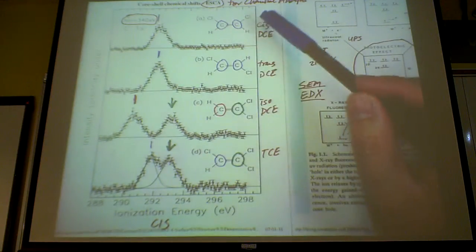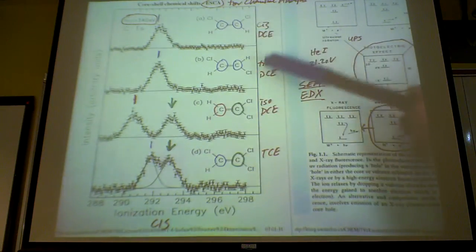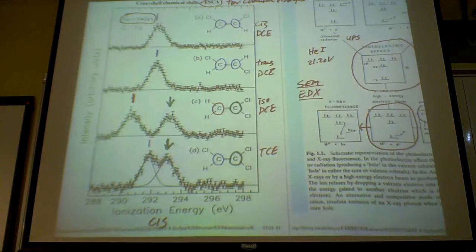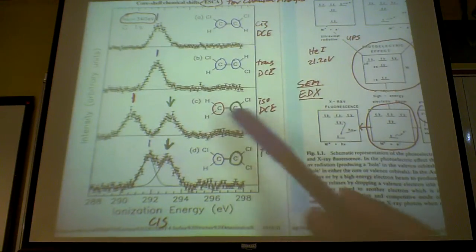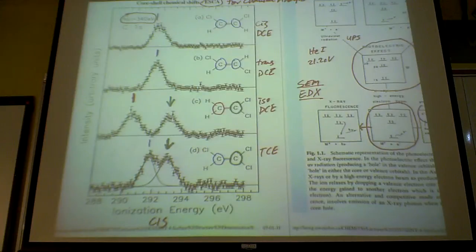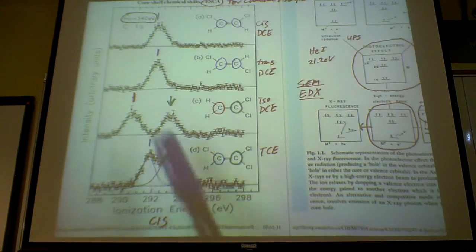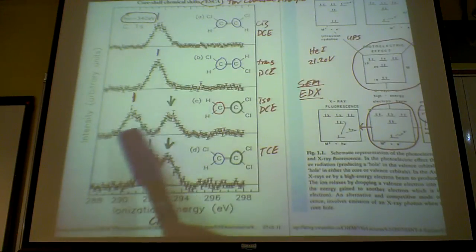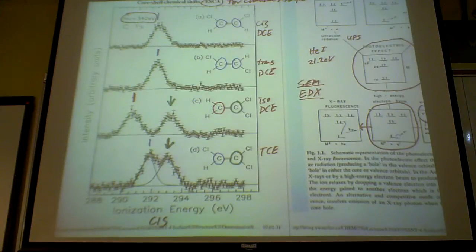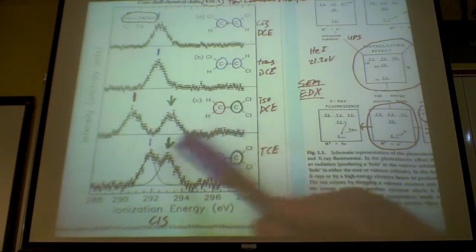So for example, this one, you can compare cis-dichloroethylene, trans-dichloroethylene, and iso-dichloroethylene. The different atoms as indicated by different color give you different position of the carbon 1s peak, and the ratio between these peaks is important, because the ratio of these peaks correspond to the stoichiometric ratio of the number of carbon atoms that you have, respectively.